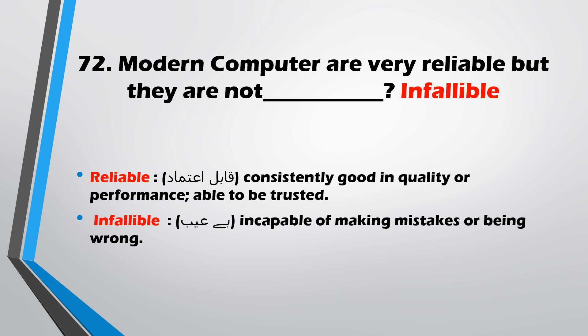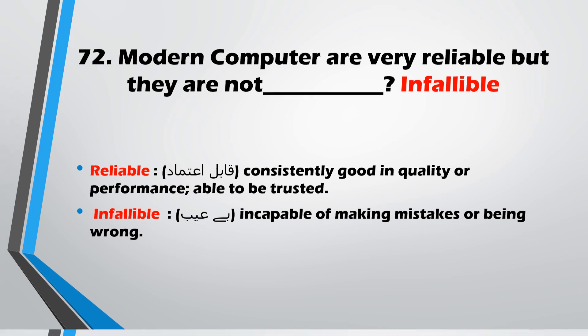Question No. 72: Modern computers are very reliable but they are not infallible. They can still make errors and are not infallible.